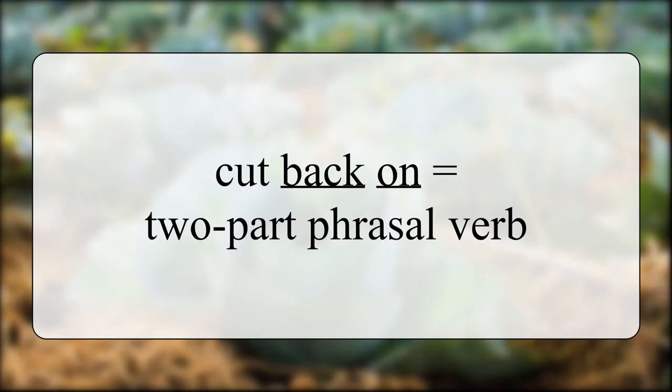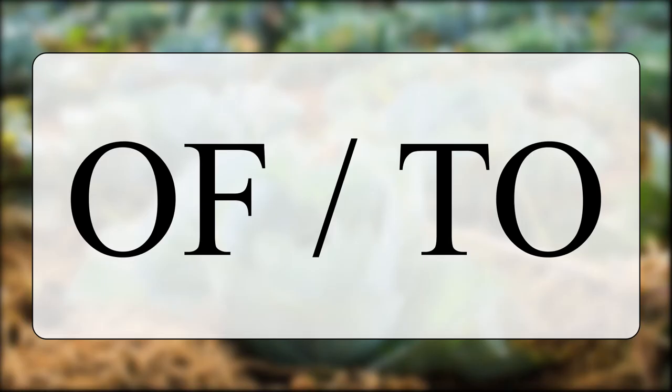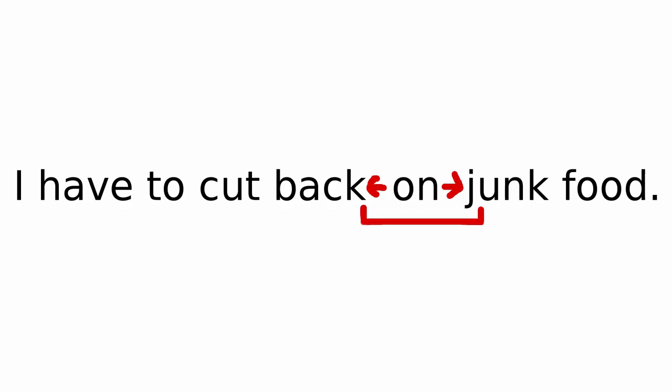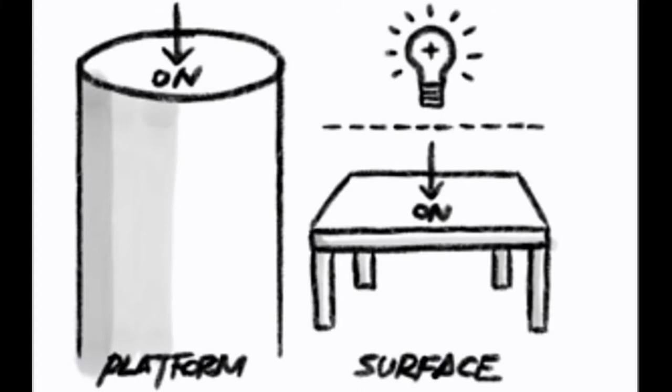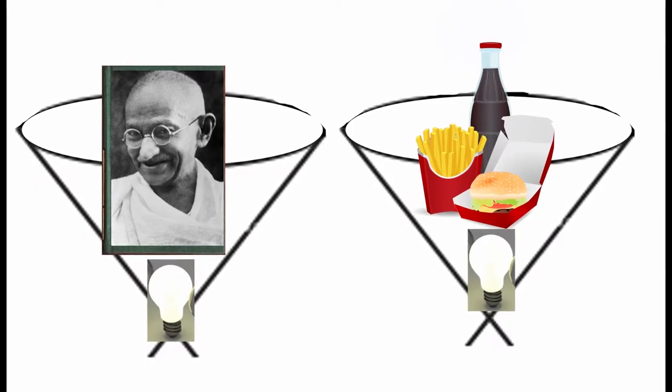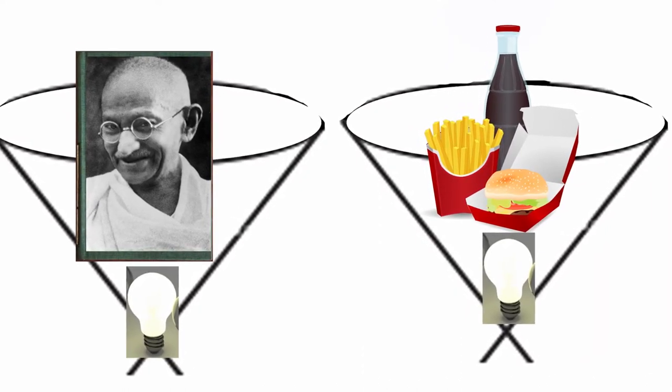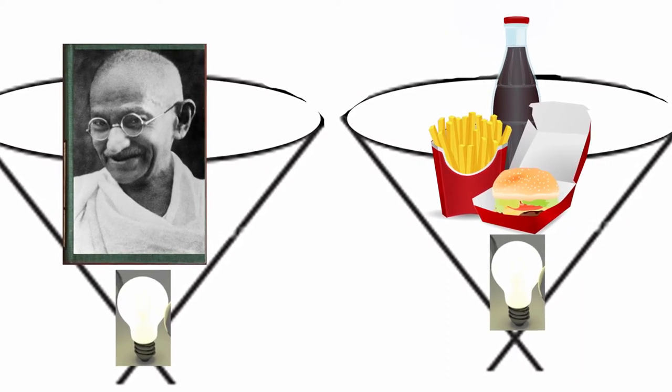Most resources will tell you that this is a two-part phrasal verb. However, it is not. On is a connector between cut back and junk food. Usually, prepositions like of or to are connectors between phrasal verbs and their objects. In this case, the preposition on is being used, which is less common. But there's a reason, which is the logic of the preposition on. This actually works exactly the same way as saying this book is on Gandhi. The context and application is a little bit different, but it should be easy to see that the same basic type of expression or surface meaning is being used.